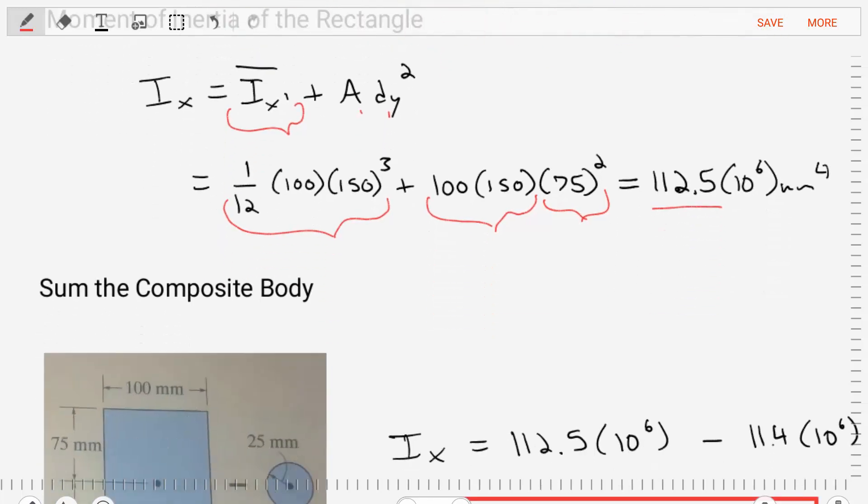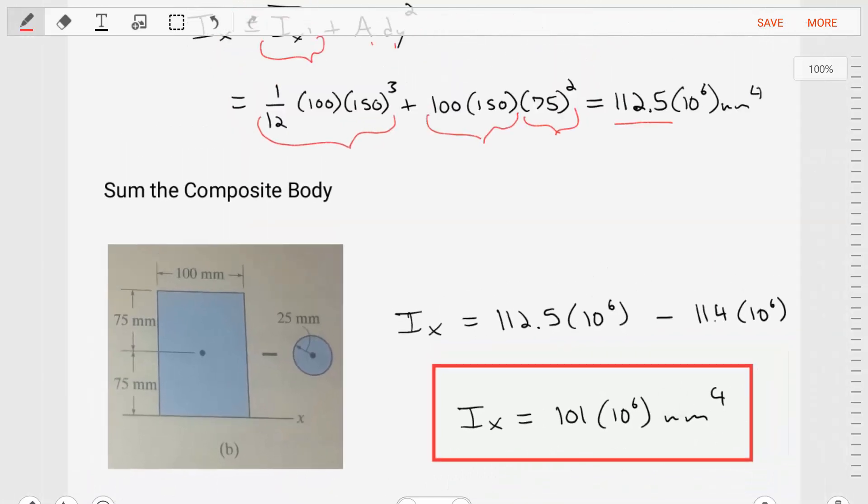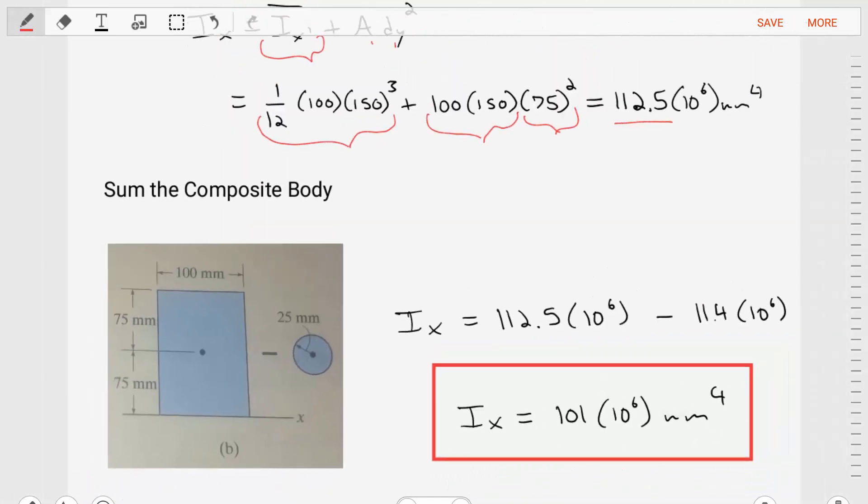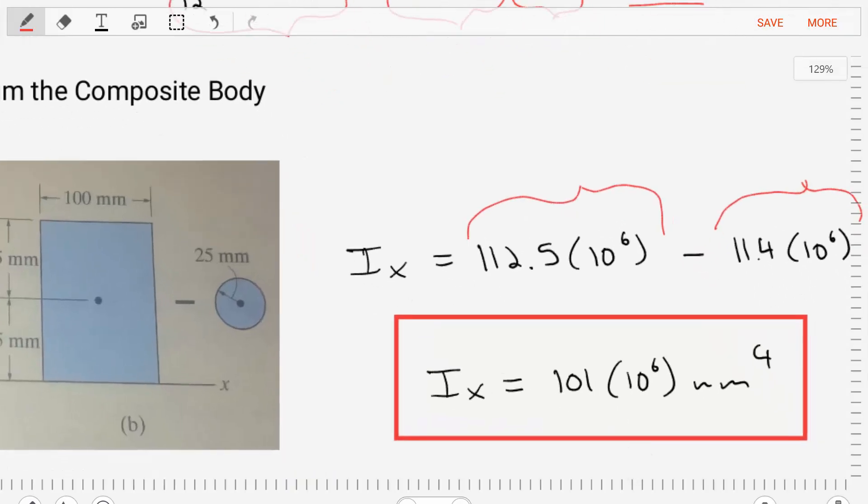Now, in our last step, we're going to want to sum up the moments of inertia to form our composite body. Now, the body that we have is a rectangular shape with a hole in the center of it, right? So, in forming our moment of inertia, we need to create that structure again. So, we're going to take the moment of inertia for the rectangle, we're going to subtract the value for the circle, and we end up with the moment of inertia of our composite body, where Ix is equal to 101 times 10 to the 6 millimeters to the power 4.